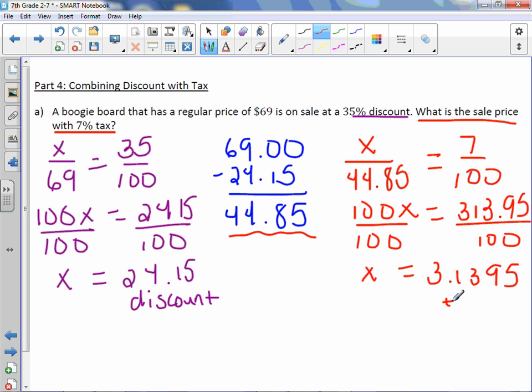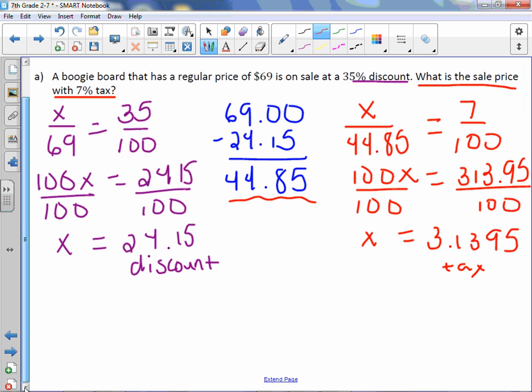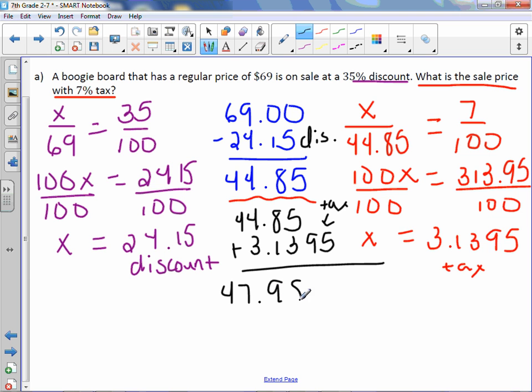X equals 3.1395. Now this is tax. Don't round until the very, very end of the problem. So we take our amount of $44.85, and now we need to add the tax. So up here was the discount, and now we are adding the tax of $3.1395. This is the tax. And we get $47.9895. Now we can round to the nearest cent, which would turn this to $47.99.